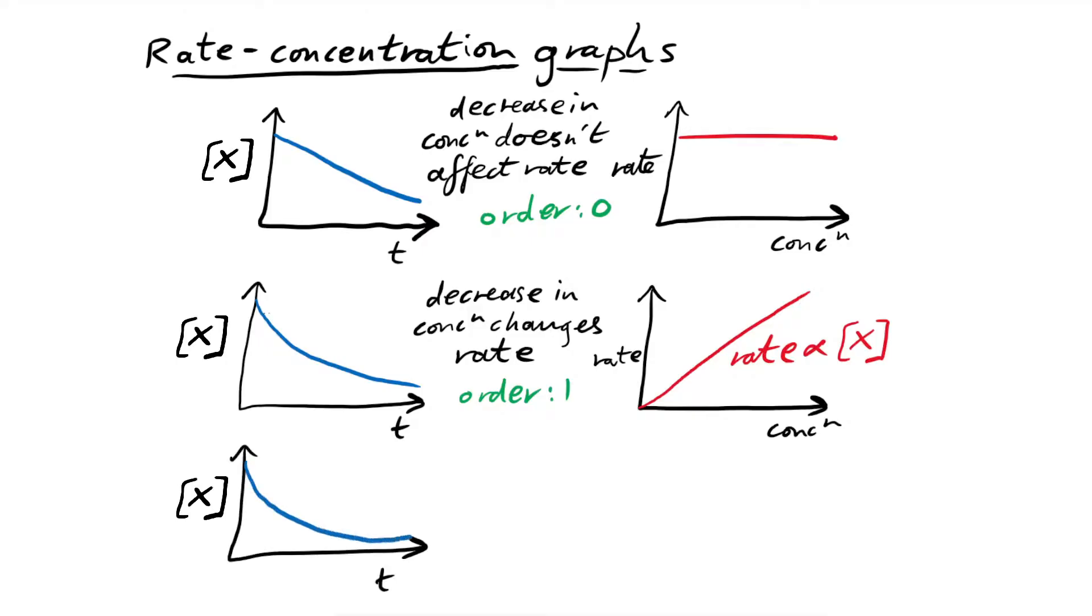And lastly, here we have a bit of a steeper curve going down. If we did some calculations, we'd find out that actually the higher the concentration, the concentration has more of an effect on the rate of reaction. So rate is proportional to the concentration squared. So that means that the order with respect to X is two. So we can say the rate of reaction is zero order with respect to X. Next one down, we can say the rate of reaction is first order with respect to X, and then second order with respect to X.